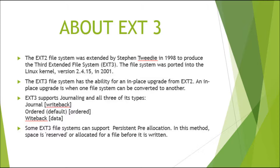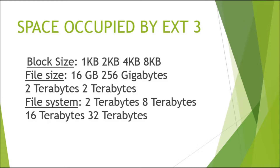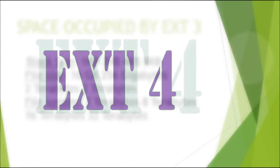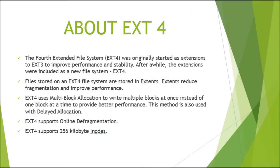Some ext3 file systems support pre-allocation. In this method, space is reserved or allocated for a file before it is written. The space occupied by ext3: block sizes are 1KB, 2KB, 4KB, and 8KB. File sizes are 16GB, 256GB, and 2TB, with file system sizes of 2TB, 8TB, 16TB, and 32TB.